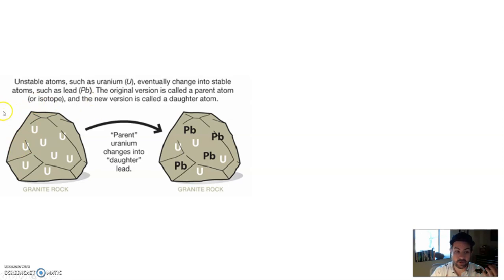Uranium is radioactive, so it spontaneously decays, radioactive decays, breaks down, and turns into something else. It changes. It morphs into something else. In this case, uranium, which is the parent atom, eventually morphs and changes into its daughter product, lead.